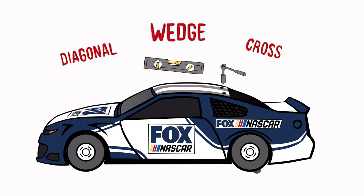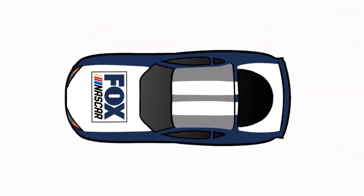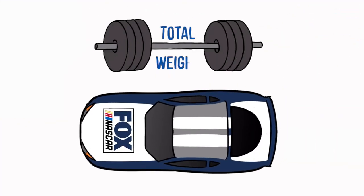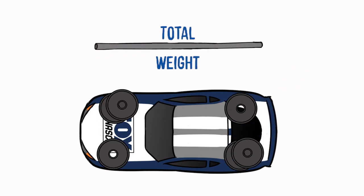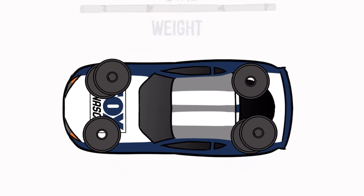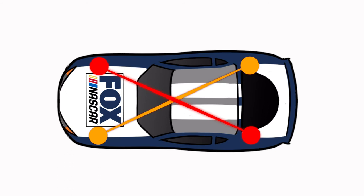In the simplest terms, it's how much the car's total weight rests on the left rear and right front. The corners of the car work in unison like an X. A wedge adjustment to the left rear will impact the right front.